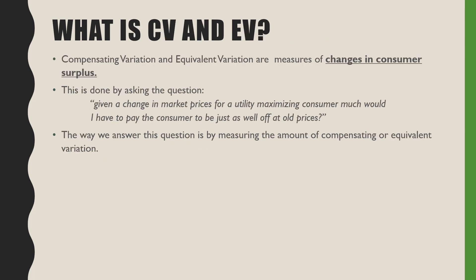Compensating variation and equivalent variation are measures of changes in consumer surplus. This is done by asking the following question: given a change in market prices for a utility-maximizing consumer, how much would I have to pay the consumer to be just as well off at old prices?